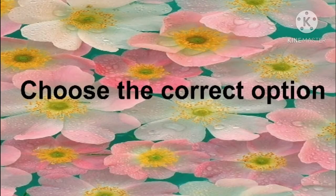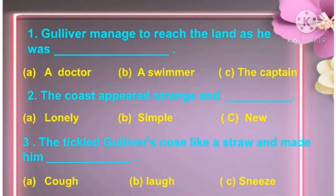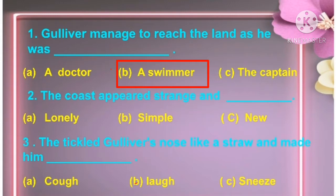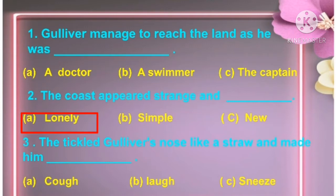Now let's see — choose the correct option. First: Gulliver managed to reach the land as he was a doctor / a swimmer / the captain. The answer is a swimmer. Second: the coast appeared strange and lonely / simple / new. The answer is lonely.